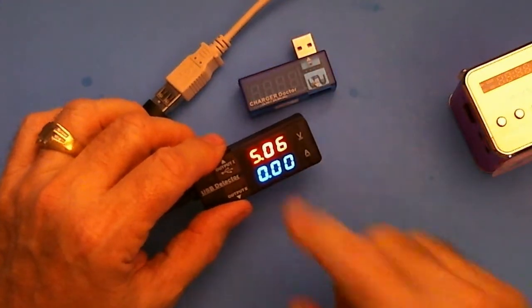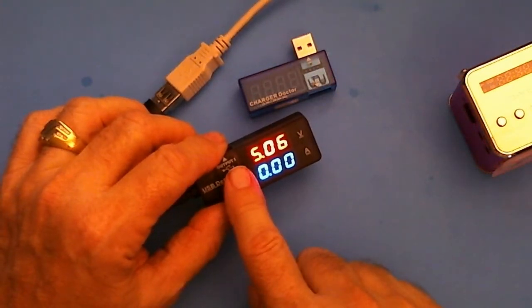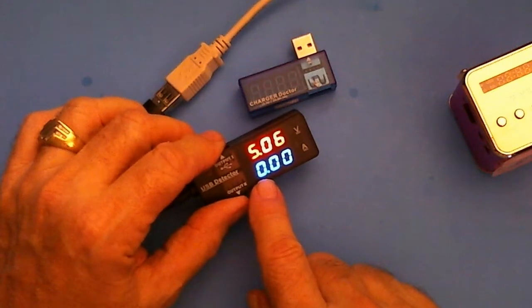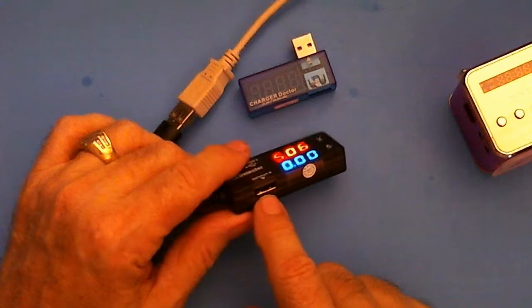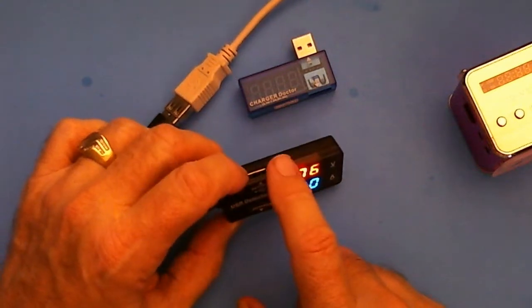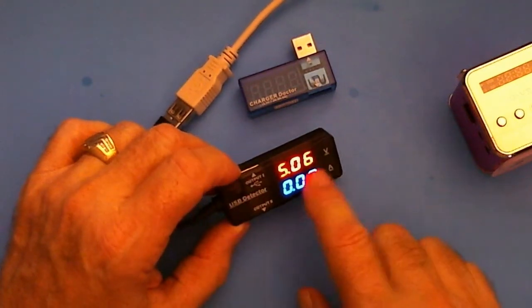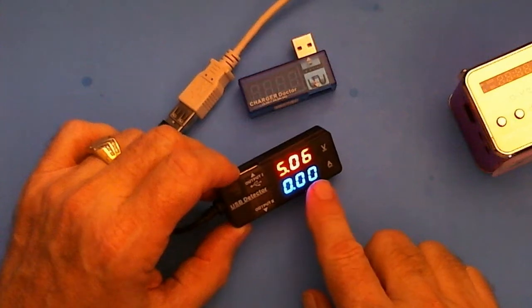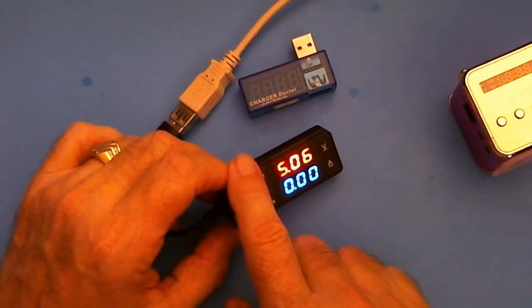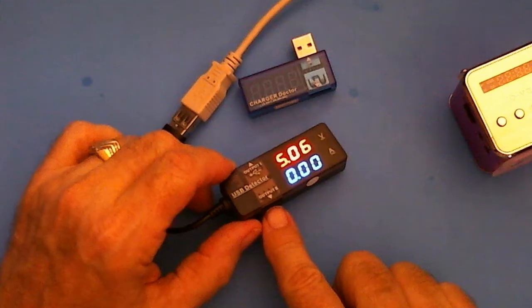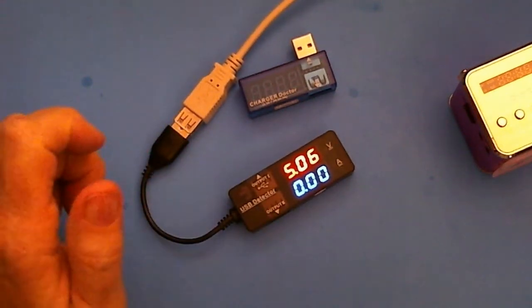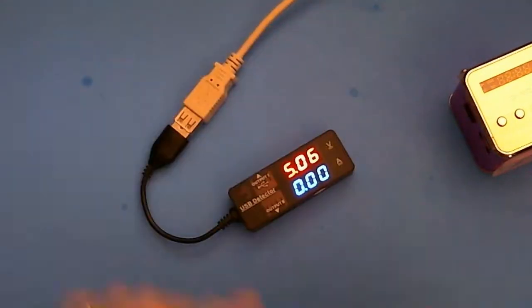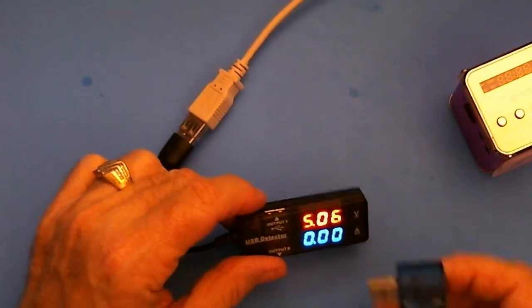It has two displays, one for voltage and one for current, plus it has two connections. One is the connection that shows you what the current draw is on whatever device you hook to, and the other one is just a pass-through so you don't lose that USB port. And you can even test the tester.